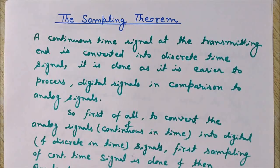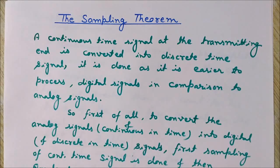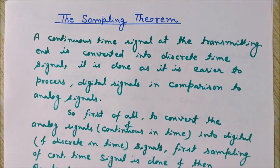Generally after the process of sampling, we do another important process known as quantization. Quantization is a process to convert analog signals into digital signals. Analog signals are signals that have an infinite number of values in any time interval, but digital signals have a certain number of values. For example, binary numbers have only two levels — zero and one — and another digital signal may have values like zero, one, two, and three.